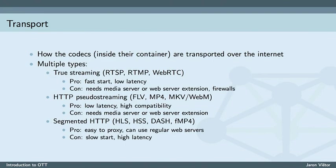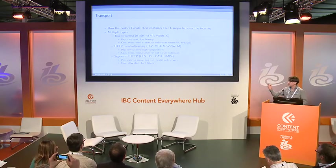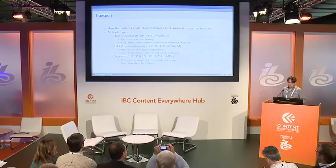Moving on to transport methods — these define how codecs inside their containers are delivered over the internet, and this has the main impact on delivery quality. I've split this into three types. First, the true streaming protocols: RTSP, RTMP, and WebRTC. These do actual streaming by connecting over usually proprietary protocols not yet natively integrated into players or devices — though WebRTC should be in the future. Their advantages are really fast start times and low latency, great for live. However, they require a media server or web server extension, and they often have trouble breaking through firewalls, making delivery cumbersome.